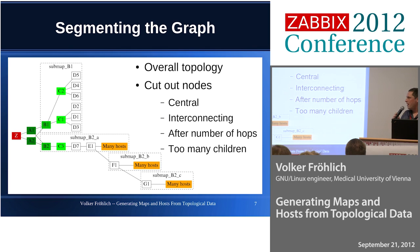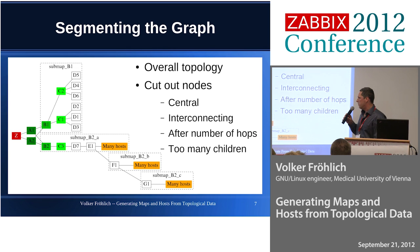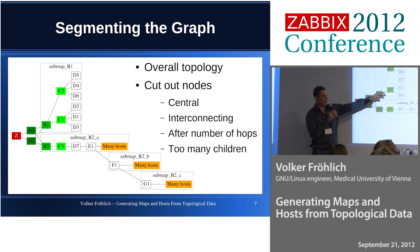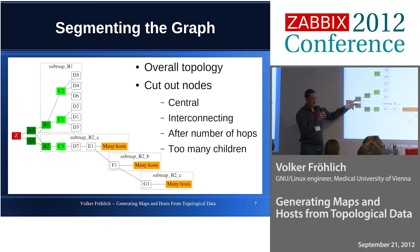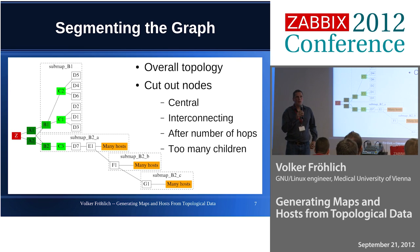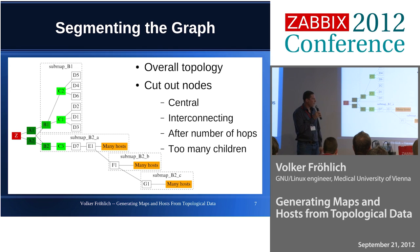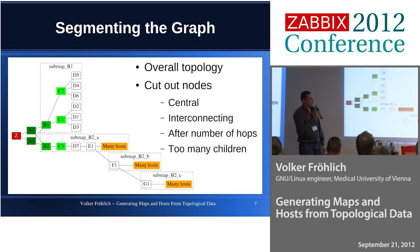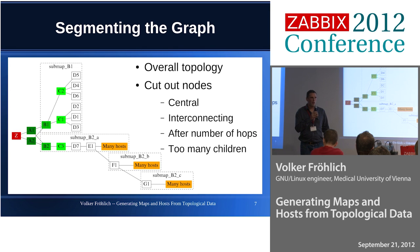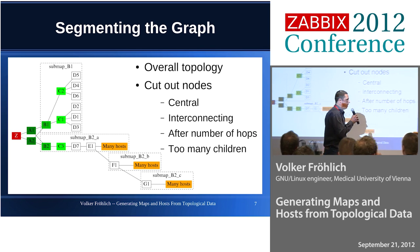The network has a star-like structure with one, two, or probably three branches, a clustered central switch structure, and C is for the Zabbix server. As I said, we have to segment the graph in some fashion, otherwise it will be just too huge for a Zabbix map. There are different approaches: we could limit it by the total number of hosts, cut it off after a couple of hops, or use a combination of those — and then split the graph into these pieces to map later on.